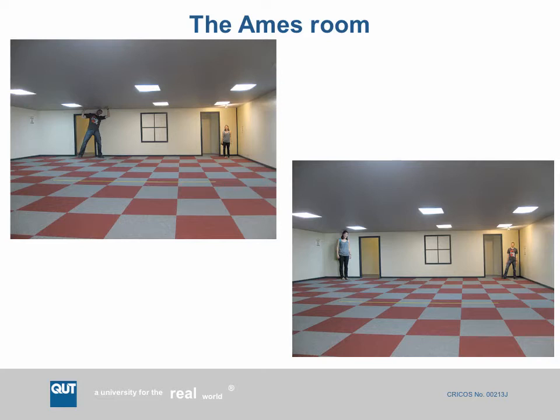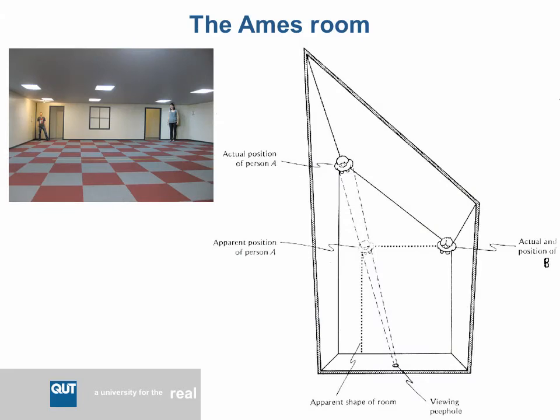Human beings use many different ways to figure out how far away things are — not just the fact that we've got two eyes viewing the world from different viewpoints. There's a paper that says there are maybe nine different ways we unconsciously use to work out how far things are from us. These techniques are often called different visual cues and they depend on the distance. There's a graph showing the distance range over which these different effects work. Some techniques are used for things that are close, some for things very far away.